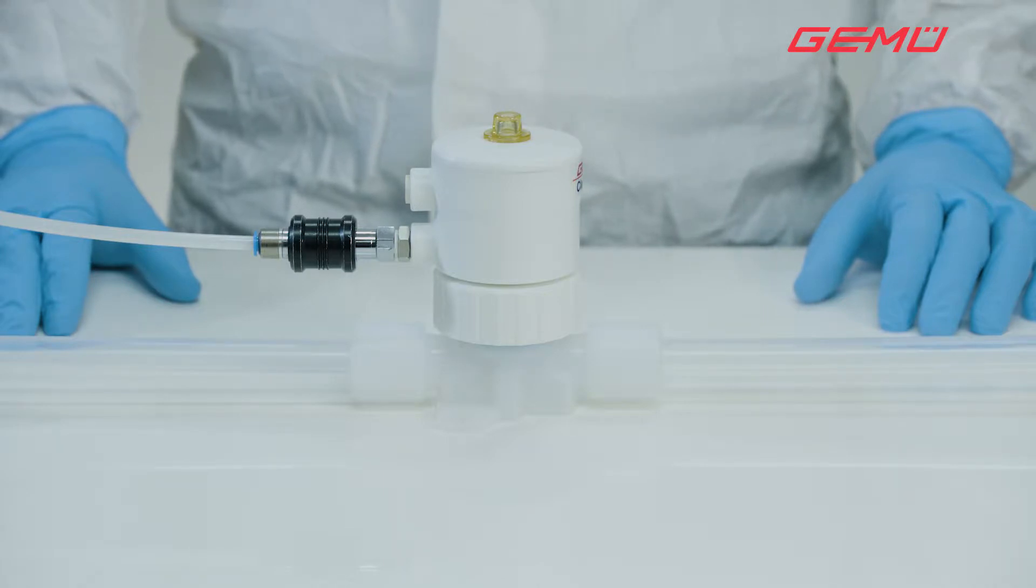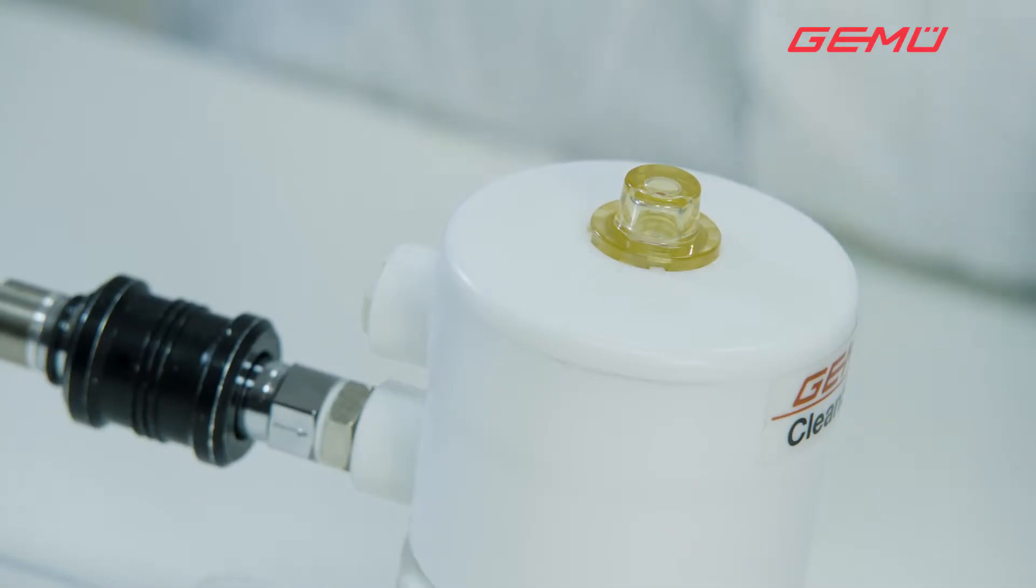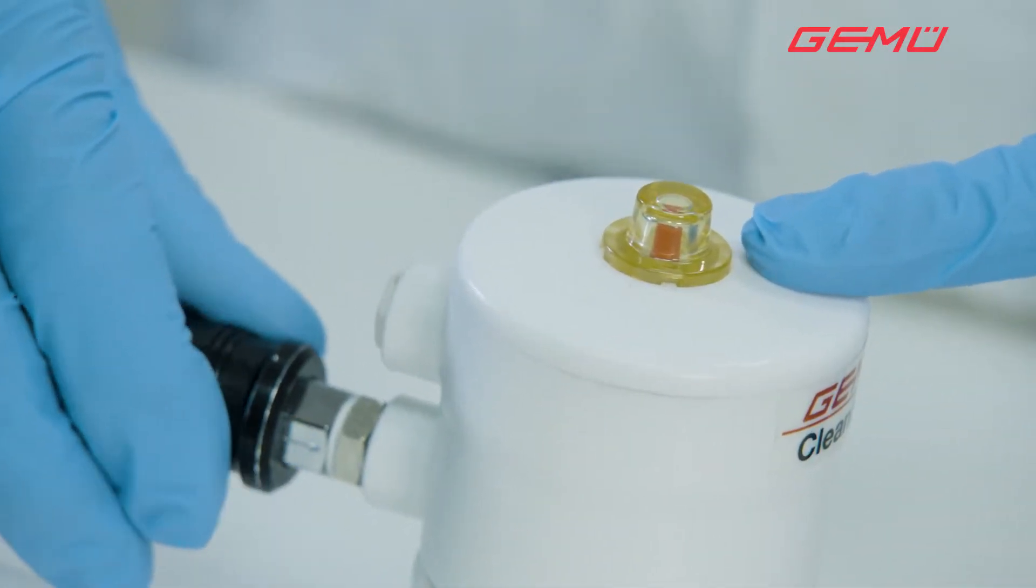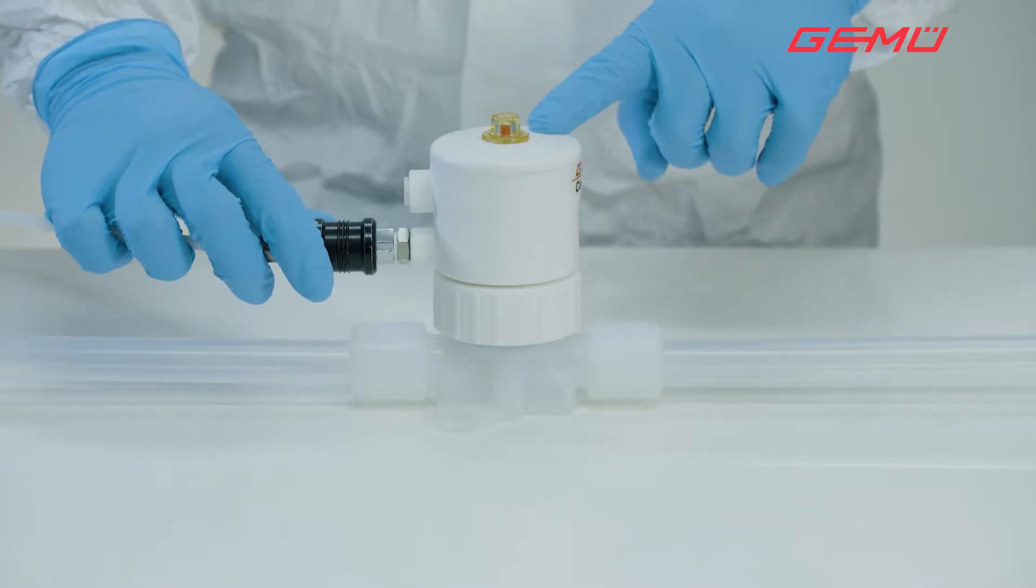The diaphragm replacement is carried out using a normally closed valve as an example. The actuator must be moved to the open position through activation with compressed air. This position has been reached when the red position indicator can be seen in the transparent cap.